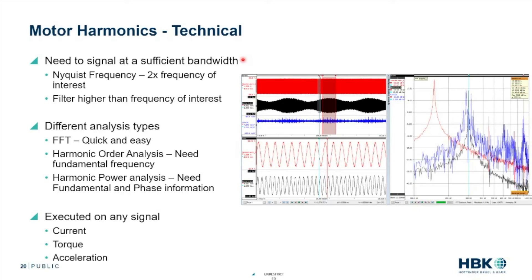We need to measure the signal at a sufficient bandwidth. So everybody always quotes the Nyquist frequency, which is two times the frequency of interest. But if we really look at the details of measurement, we need to look at the filters of our measurement system. We need to look at what the sampling rate is. And we need to filter higher than the frequency of interest. So we need to make sure that our frequency of interest has sampling rate way sufficient and then filters above that frequency of interest.